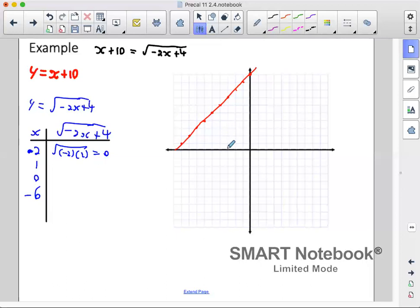Okay, so at 2, I am at 0. I've skipped over 1. I'll go to 0, which I know is easy to calculate for this one, because negative 2 times 0 plus 4 gives me square root of 4, which is 2. So at 0, I am at 2.